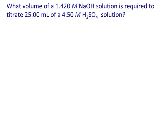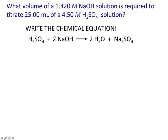Here's an example: What volume of 1.4 molar sodium hydroxide is required to titrate 25 milliliters of a 4.5 molar sulfuric acid solution? This is a good intro problem to think about titrations. So what's your first step? You've got to figure out what equation you're working with — two sodium hydroxides for every one sulfuric acid, because sulfuric acid is a diprotic acid.